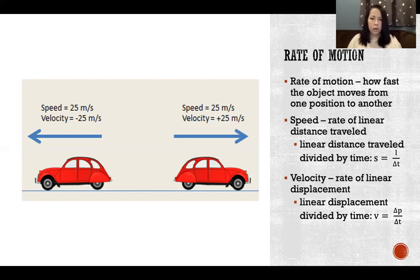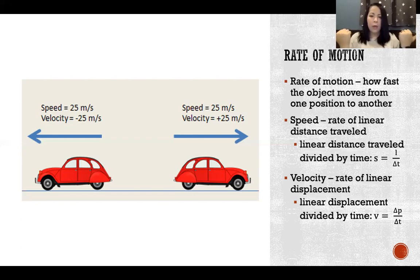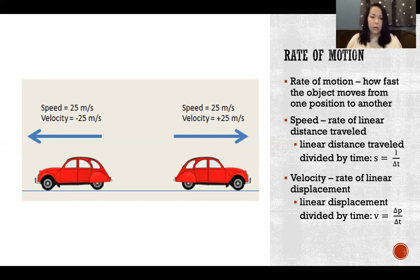In this picture, we can see a car might be driving 25 meters per second in either direction — the speed is the same in both cases, but the velocity is opposite. If we define going right as the positive direction and going left as negative, the rate of travel — the speed — remains the same, but the direction changes, and that changes the velocity.